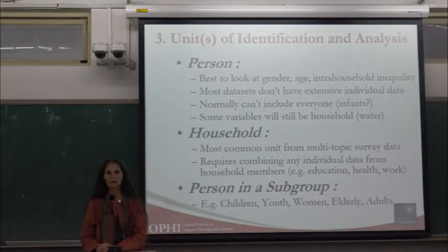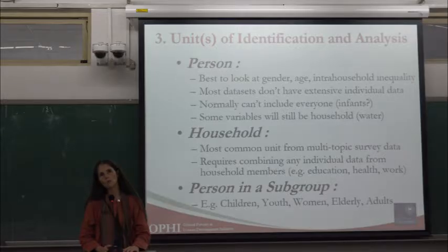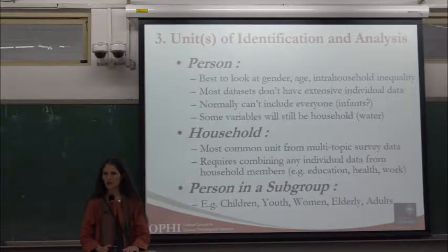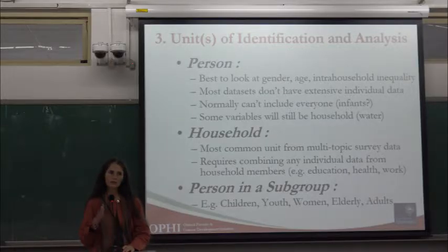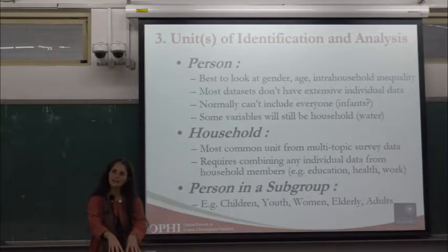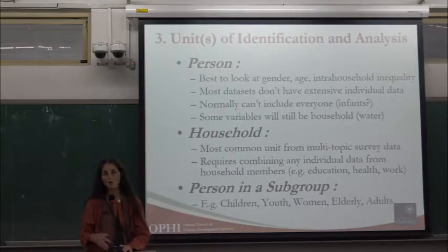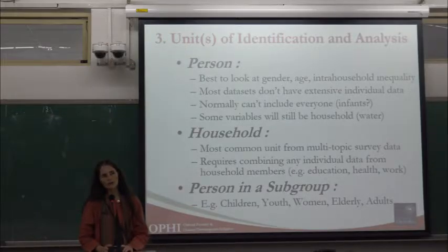Most national governments use household as the unit of identification. The government of Colombia articulated an ethical position: they want households to care for and share benefits with each other, and to strengthen the family as the local unit. Their government services are provided to households. They were concerned that identifying some household members as poor but not others might lead to differential benefits and create tensions within households, or undermine a sense of shared responsibility.